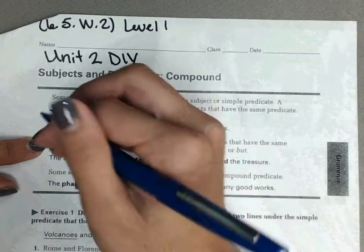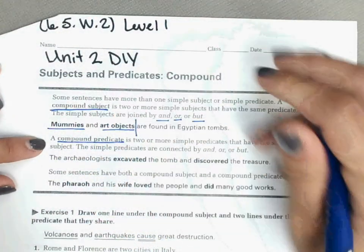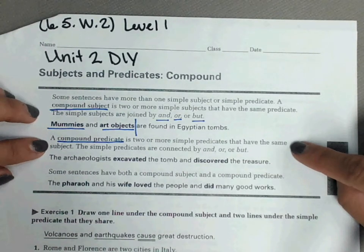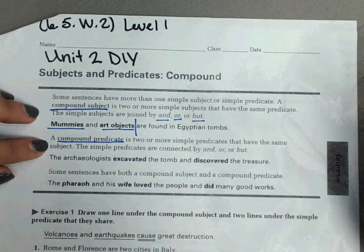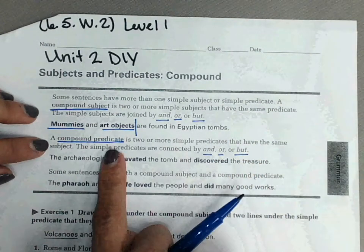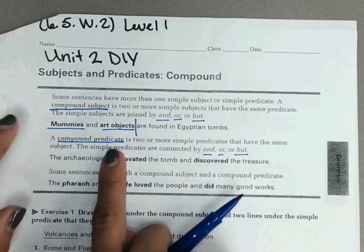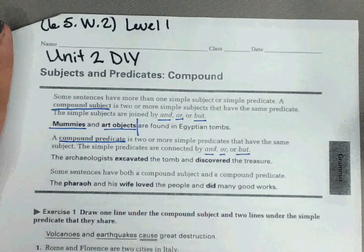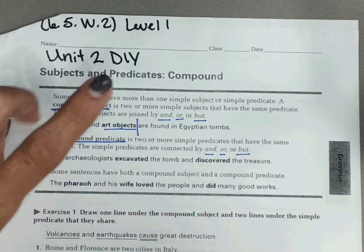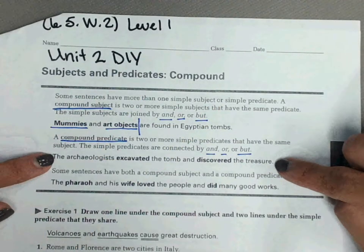A compound predicate is two or more simple predicates that have the same subject. The simple predicates are connected by 'and,' 'or,' or 'but.' In other words, a compound predicate has one subject — one thing doing two different actions.